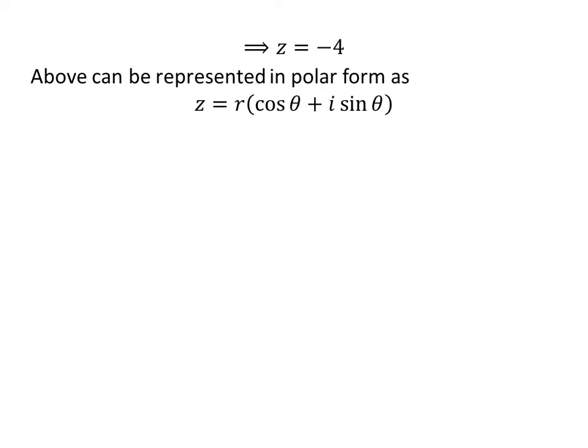The complex number z can be represented in polar form as r(cos θ + i sin θ). Here, r equals the modulus of z, and r cos θ = -4 and r sin θ = 0.